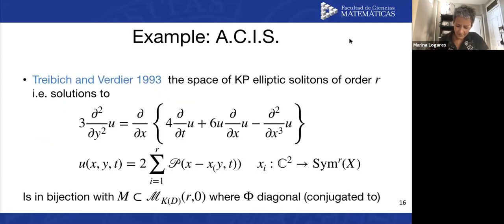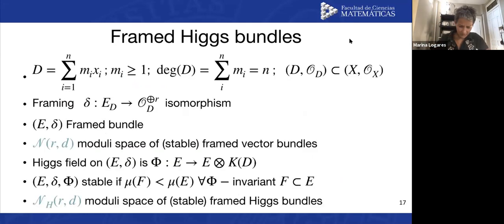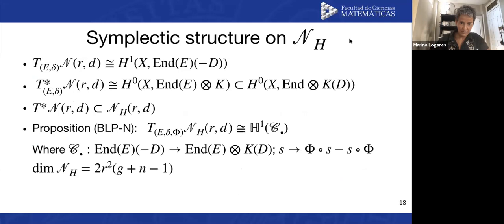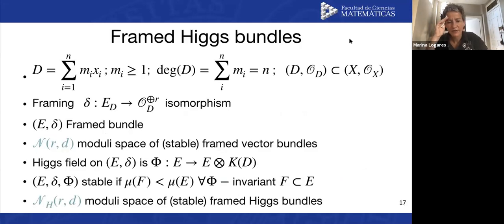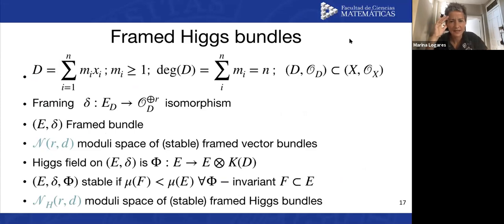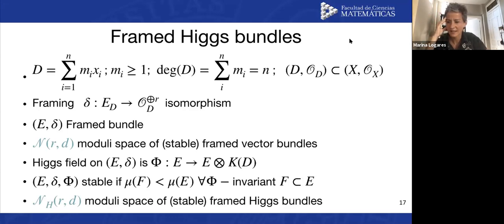In the same philosophy as Hitchin's paper, one can think: can we decorate these KD pairs somehow so that the moduli space of our decorated KD pairs is a cotangent of a moduli space of vector bundles, without the Higgs field? This is the idea for framed Higgs bundles.